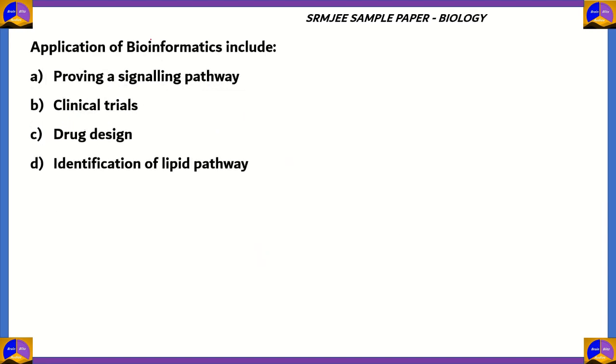Now let's look at a biology question. The application of bioinformatics include proving a signaling pathway, clinical trials, drug design, identification of a lipid pathway. So jobs such as clinical trials and identification of a lipid pathway go under research. So therefore, these options are incorrect. Proving a signaling pathway among cells is an important job under microbiology because that helps us in finding out cures for diseases and how best to combat them.